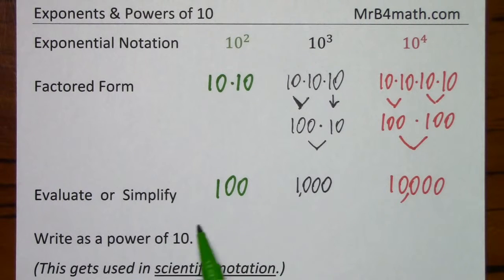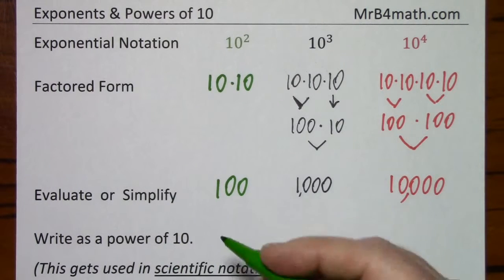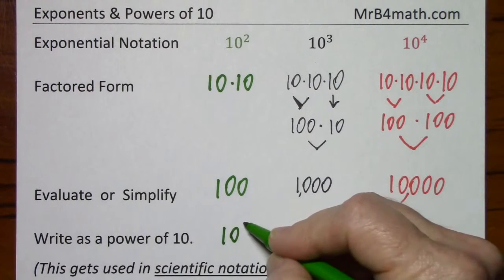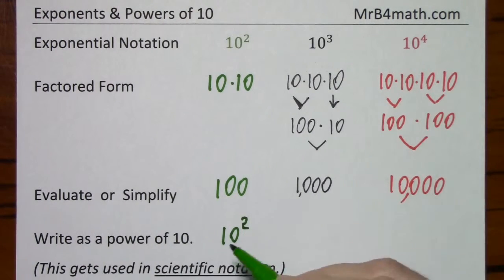If you're given 100 and asked to write it as a power of 10, you simply put the base of 10, count the 0s, and you know this to be correct.